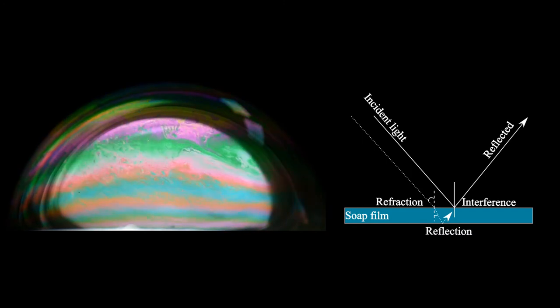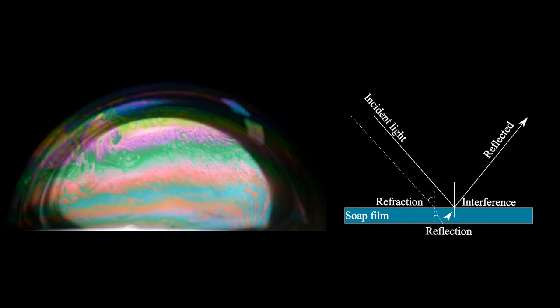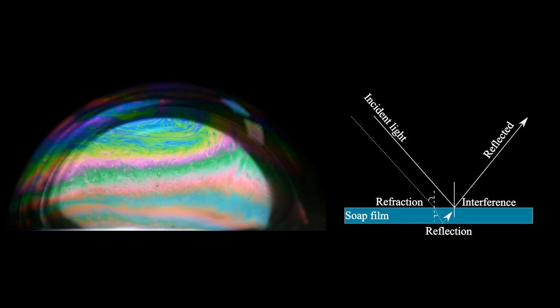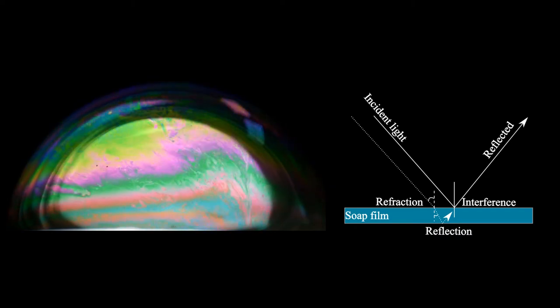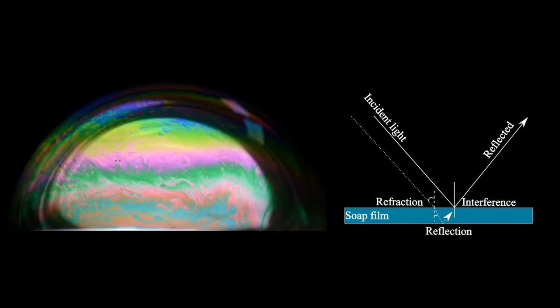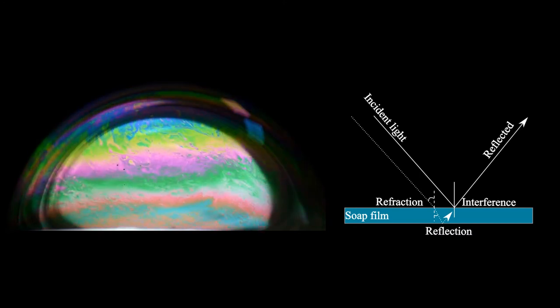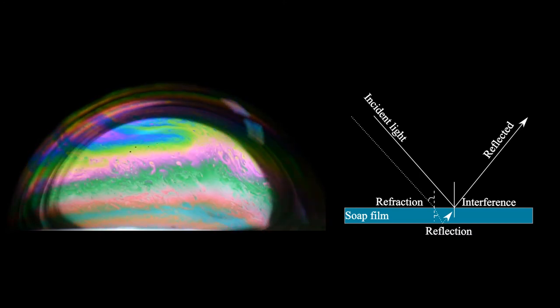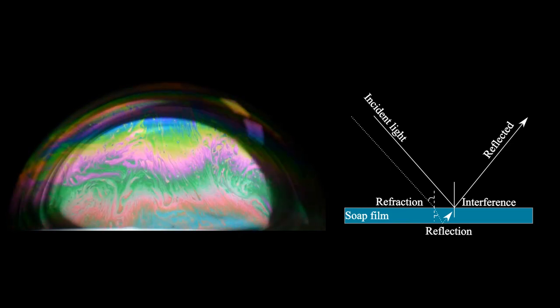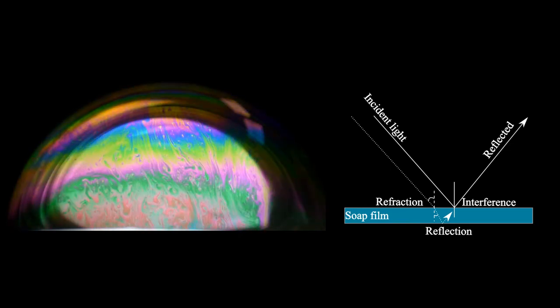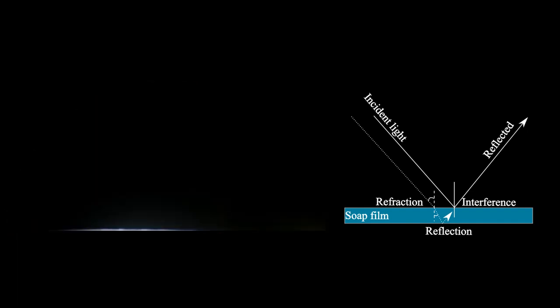Now the phase of the reflected light depends on the angle of incidence and the thickness of the film. Both these contribute to the phase shift between the interference of the incident light and the reflected light.